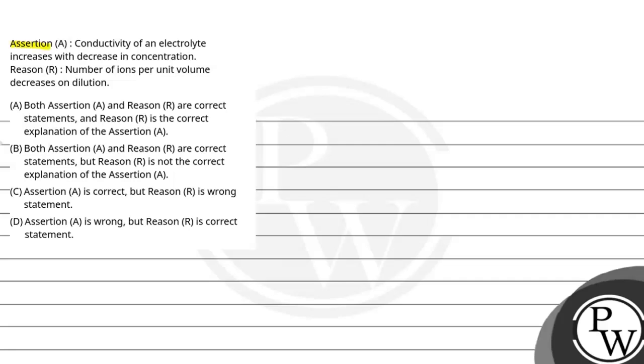Hello, let's see this question. Assertion: Conductivity of an electrolyte increases with decreasing concentration. And reason for that is given: Number of ions per unit volume decreases on dilution. So we have to find that assertion or reason are correct statements or not. So key concept is here.